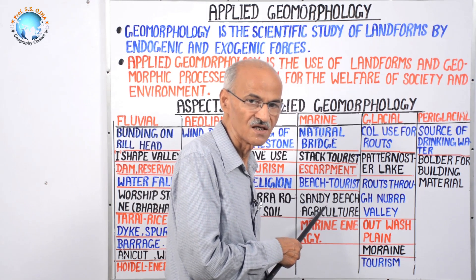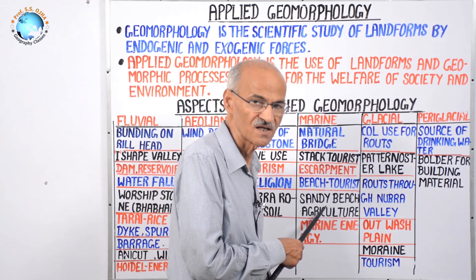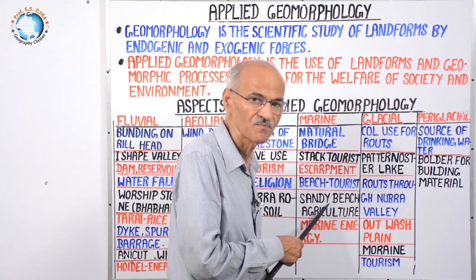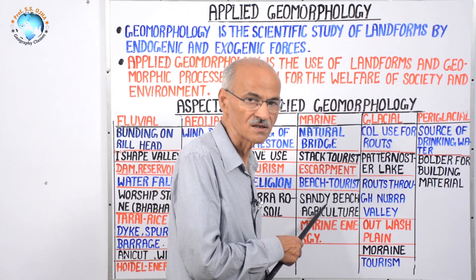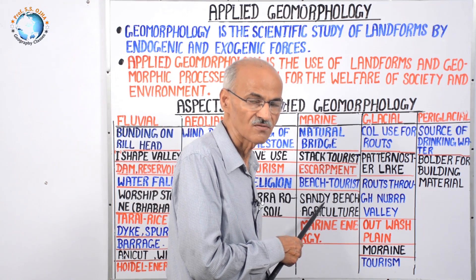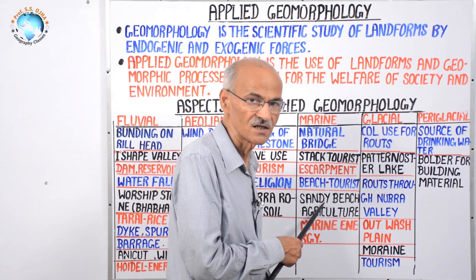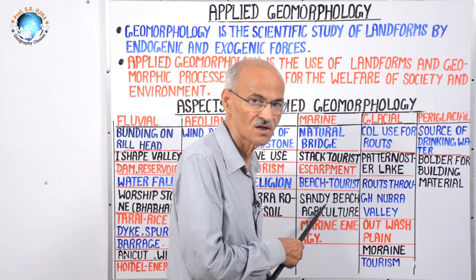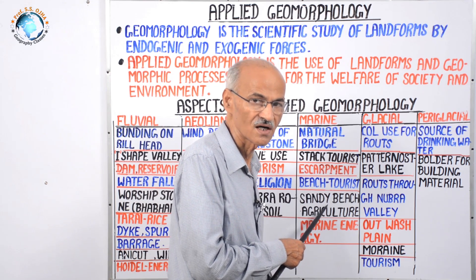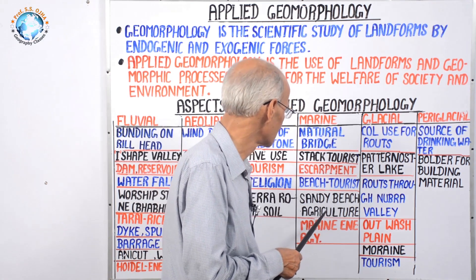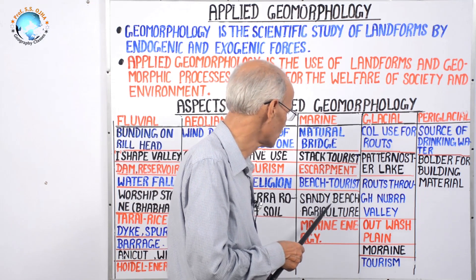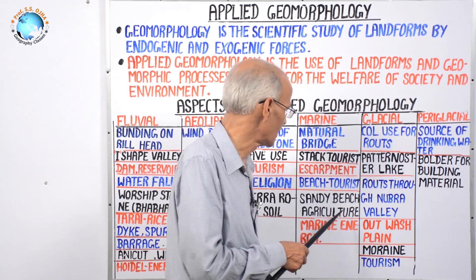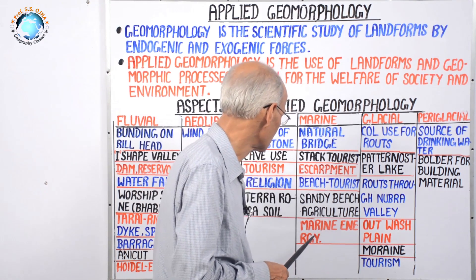Contrary to that, the east coast of India has sandy and clayey beaches because rivers like Mahanadi, Godavari, Krishna, and Kaveri drain from northwest to southeast into the Bay of Bengal, depositing vast and extensive deltas. On sandy beaches, agriculture of rice, coconut, and other crops is practiced.